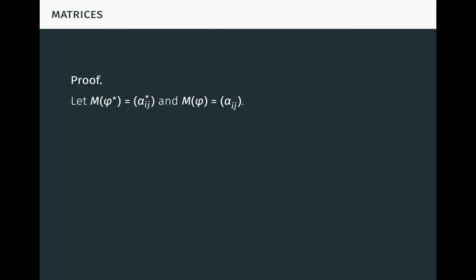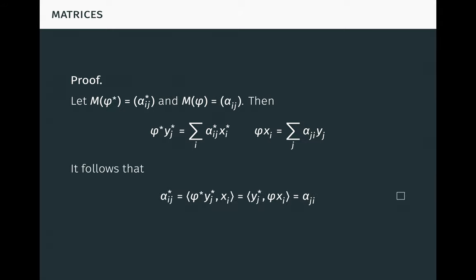Finally, we turn our attention back to matrices. Let xi, x-star-i be dual bases in V, V-star, and let yi, y-star-i be dual bases in W, W-star. Then we have a theorem: if phi from V to W and phi-star to V-star from W-star are dual maps, then the matrix of phi-star with respect to the y-stars and the x-stars is the transpose of the matrix of phi with respect to the x's and the y's. More succinctly, the matrix of a map with respect to bases is the transpose of the matrix of the dual map with respect to the dual bases. The proof is straightforward: let the matrix of phi-star be alpha-star-ij, and the matrix of phi be alpha-ij, where for both the first index counts rows and the second index counts columns. Then by definition we have these expressions for phi-star and phi. It follows that alpha-star-ij equals alpha-ji, so the matrices are transposed. It's worth noting that sometimes in linear algebra — for example when working with tensors or modules over possibly non-commutative rings — it's common to adopt a transpose convention for matrices in dual spaces. If this is done, the theorem states that dual maps have the same matrix. However, in either case transposition is happening somewhere.